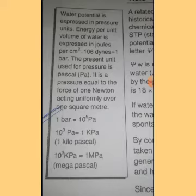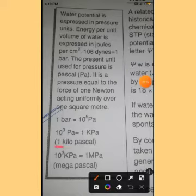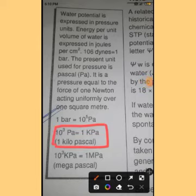It is expressed in pressure units. 1 bar is equal to 10 to the power 5 Pascal, and 10 to the power 3 Pascal is equal to 1 Kilopascal, and also 10 to the power 3 Kilopascal is equal to 1 Megapascal.